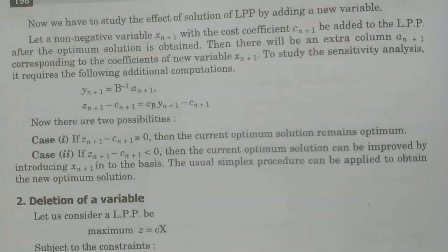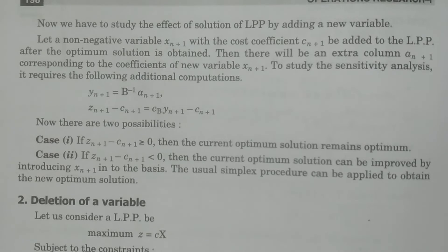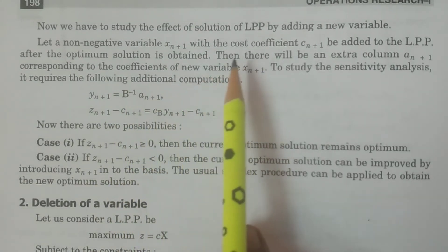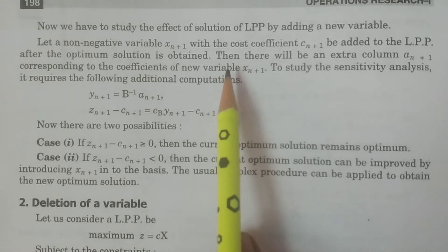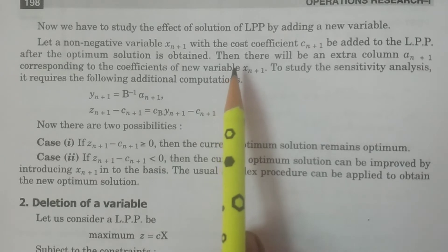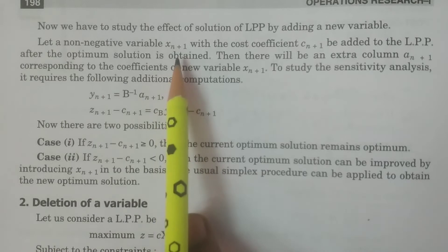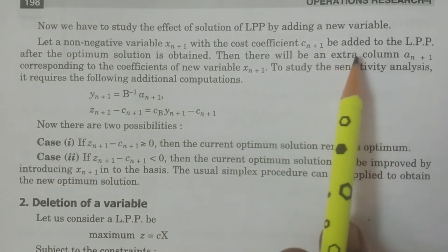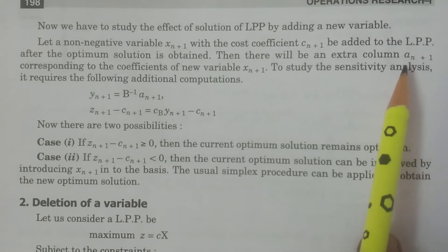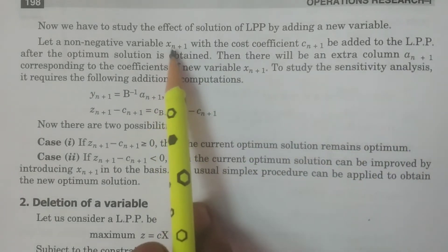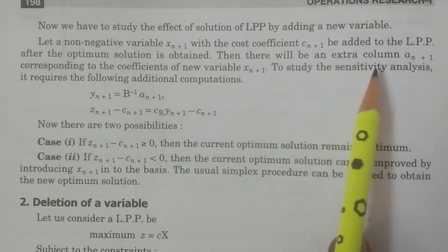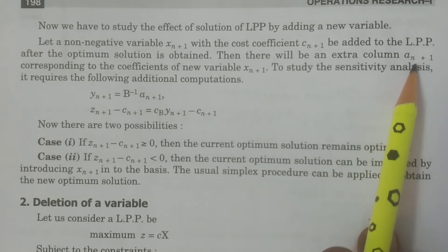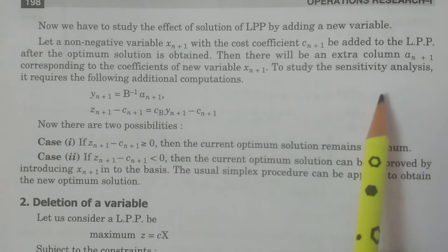So, for example, after attaining the optimum solution, one particular variable is added. If one particular variable is added — a non-negative variable Xn+1 with cost Cn+1 — it is added to the linear programming problem. Then we want to consider an extra column, the n+1 extra column, which will be considered.